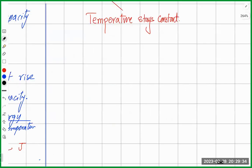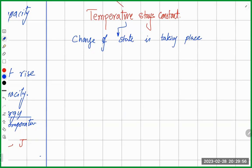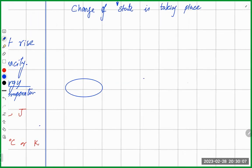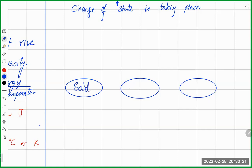If temperature stays the same when heat is provided, it means a change of state is taking place. How many states are commonly found for matter? These are solid, liquid, and gas.